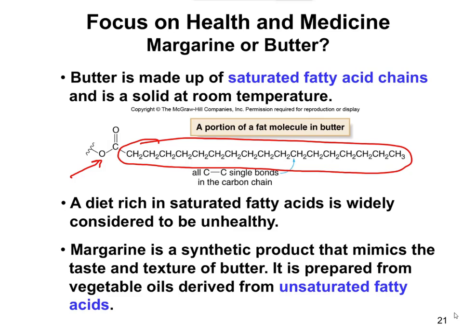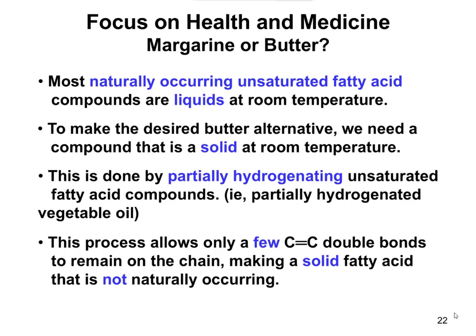The alternative is to make a synthetic product that behaves similar to butter but isn't really butter. Margarine is that synthetic product, prepared from vegetable oils, which are unsaturated fats. Let's talk about how that works.